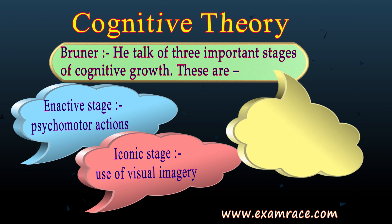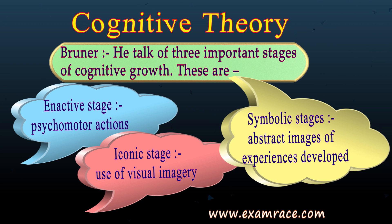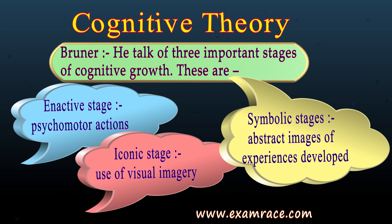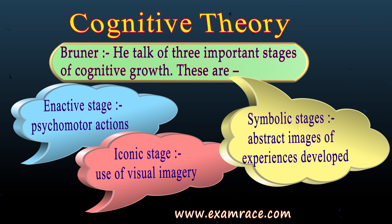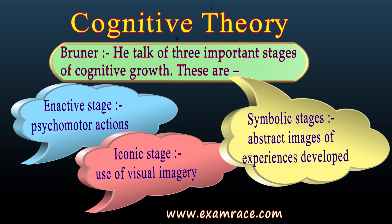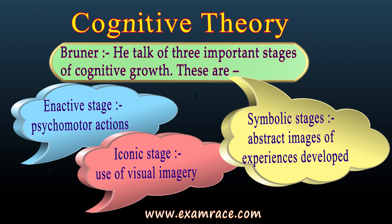The last stage is the symbolic stage — the most advanced stage of cognitive growth. Here the child develops abstract images of his or her experiences. They are no longer confined to visual imagery and can describe their experience with the help of language or the use of symbols.